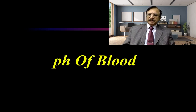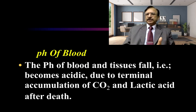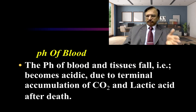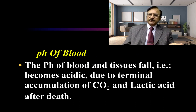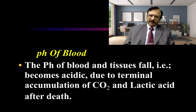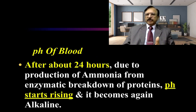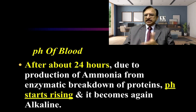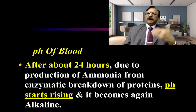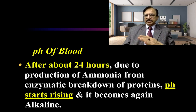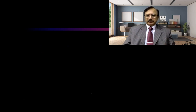The pH of the blood and tissues falls and becomes acidic due to terminal accumulation of carbon dioxide and lactic acid after death. Then after about 24 hours, due to production of ammonia from the enzymatic breakdown of proteins, the pH starts rising and again becomes alkaline. In normal life it is alkaline, but after death it becomes acidic, and then after 24 hours it again moves towards alkaline.